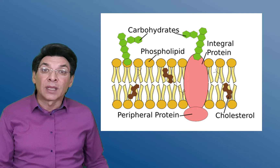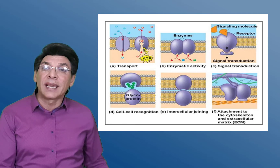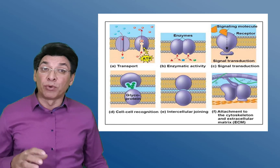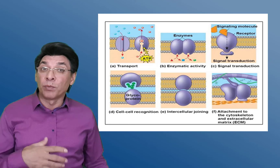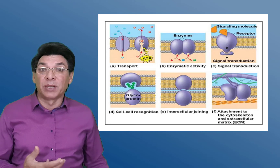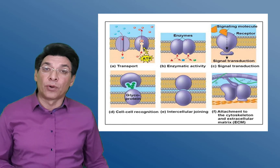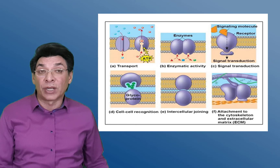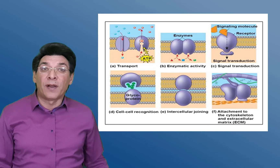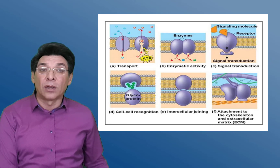Membrane proteins: First, there are associated proteins — proteins that are attached loosely to membranes, to spanning proteins, or to polar regions of phospholipids. They do not span the plasma membrane and are also termed peripheral or extrinsic proteins. They cannot function as membrane transporters because they don't span the entire membrane, and they typically function as enzymes, receptors, or structural components of the membrane.